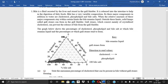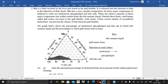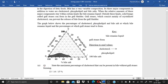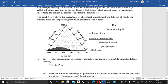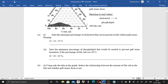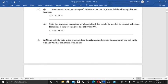So on the basis of the concept which has been given, even the graph has been given over here, you have to answer the following question. The first question is, state the maximum percentage of cholesterol that can be present in bile without gallstone forming. Then second is, state the minimum percentage of phospholipid that would be needed to prevent gallstone formation if the percentage of bile salt was 50%.